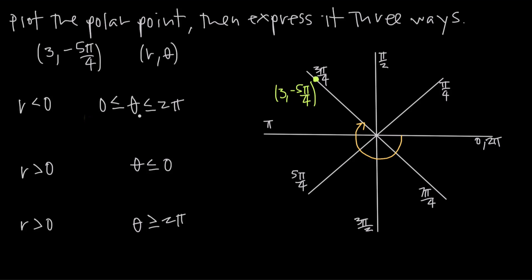The first way: we need theta between 0 and 2 pi (positive, less than one full rotation), and r less than 0 (negative). For r to be negative, we go to the opposite side of the origin. Following this line through the origin to the exact opposite side gives us 7 pi over 4, which falls between 0 and 2 pi. Setting r to negative 3 brings us back to the exact same point, so the answer is (negative 3, 7 pi over 4).